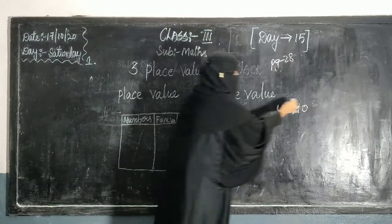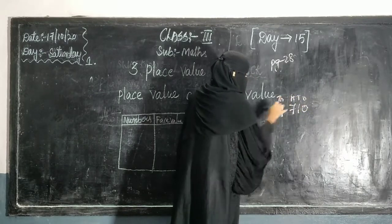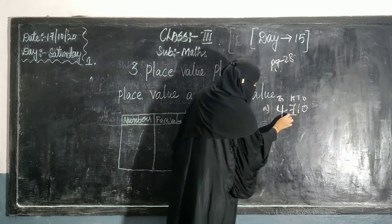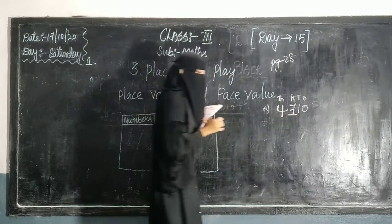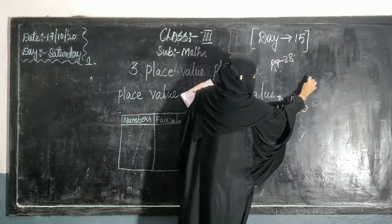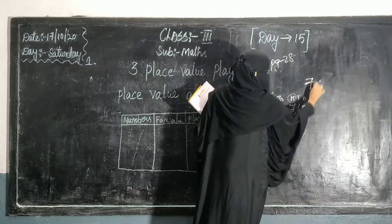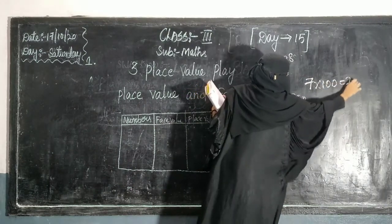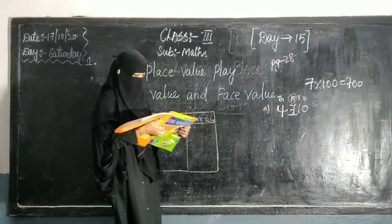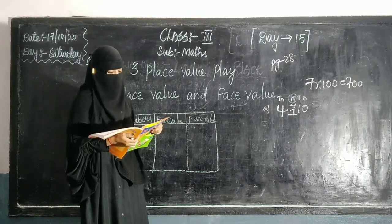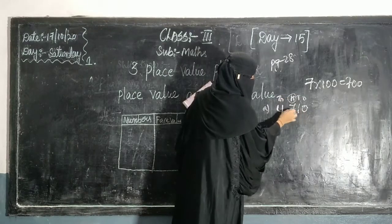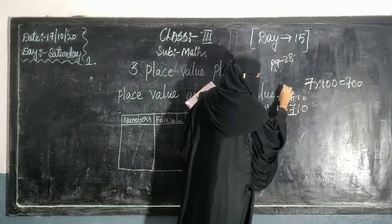The place values are 1, 10, 100, 1000. If I ask what is the place value of 7 in 4710 — 7 is in the hundreds position, so 7 into 100 equals 700. The value of a digit based on its position is called the place value of that digit.